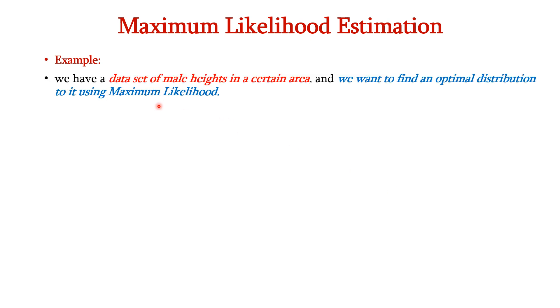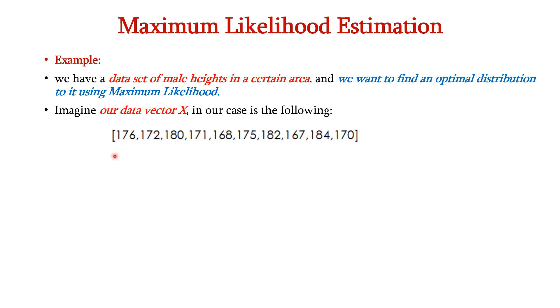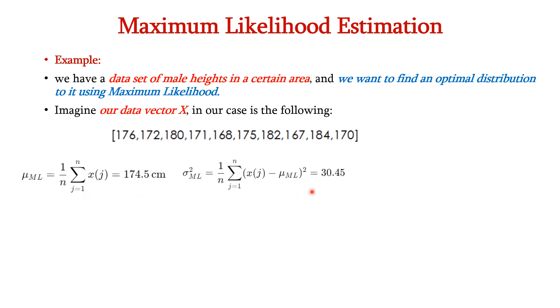Now we know the estimates for the parameters — mean and variance — of the Gaussian distribution using maximum likelihood. Let us apply this concept with an example. We have a data set of male heights in a certain area and we want to find an optimal distribution using maximum likelihood. Our data vector x has 10 data points. The mean for these data points is 174.5 cm, and the variance is 30.45, giving a standard deviation of approximately 5.5 cm.